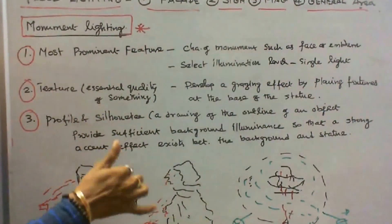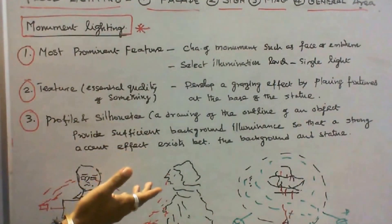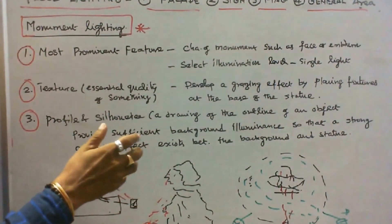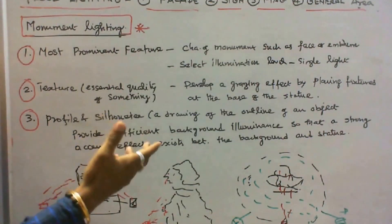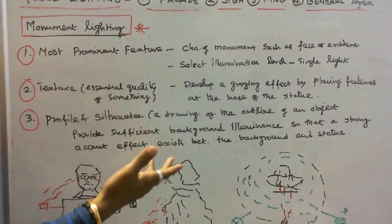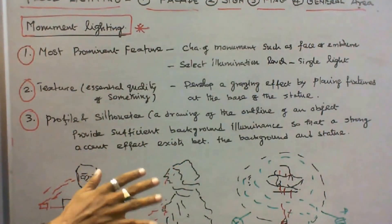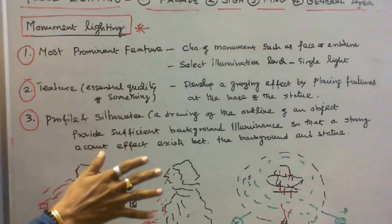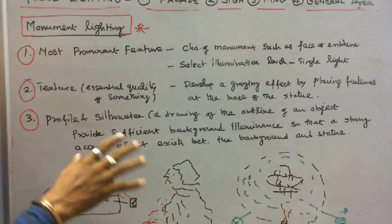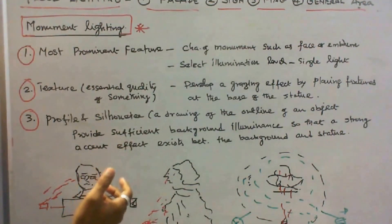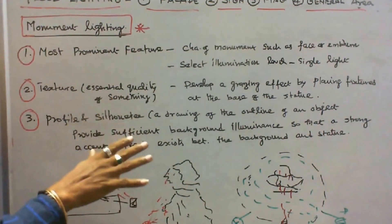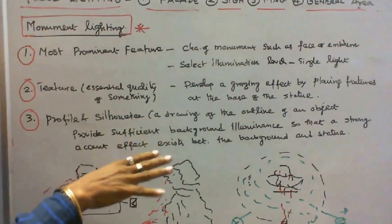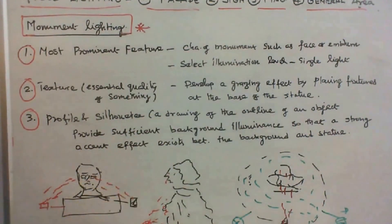There is no specific thumb rule for monument lighting. The objective is to enhance or improve the details of the monument or statue. It all depends upon the taste of the illumination engineer — the engineer must decide how to attract tourists or people using lighting. While considering monument lighting, the surrounding lighting must also be considered; that is a very important point.